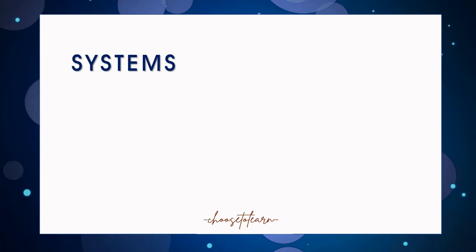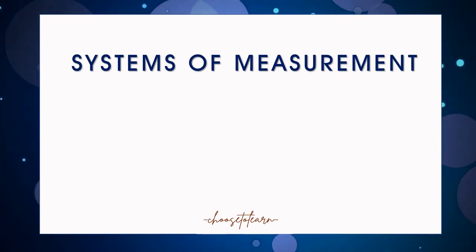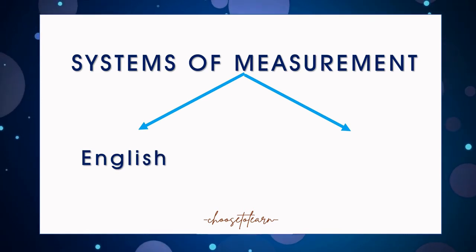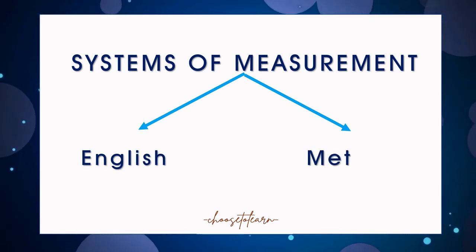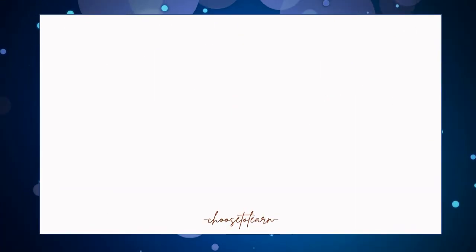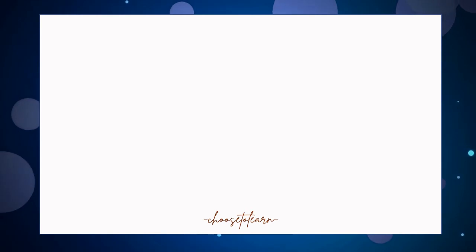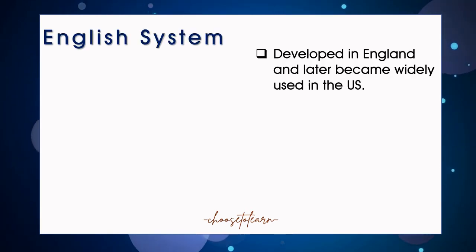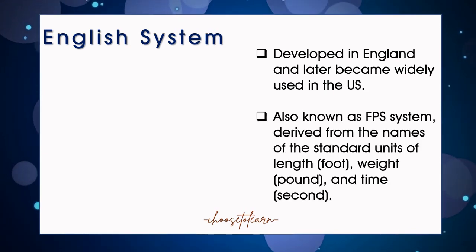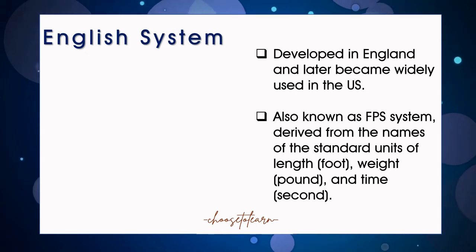There are two systems that carry different standardized units. First is the British or English system, and second is the metric system. English system was first developed in England and later became widely used in the U.S. It is also known as FPS system, derived from the names of the standard units of length, weight, and time.